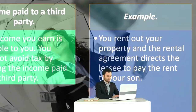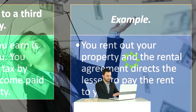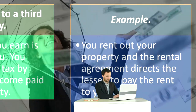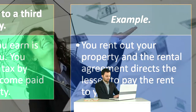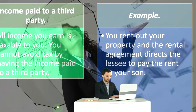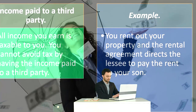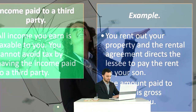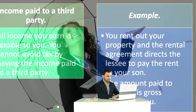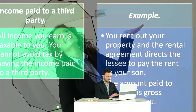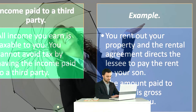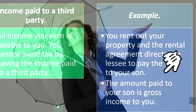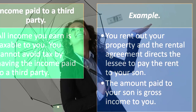For example, you rent out your property and the rental agreement directs the lessee to pay the rent to your son. You didn't receive the income directly — it went to your son. But that's clearly an attempt to avoid something. The amount paid to your son is still gross income to you.